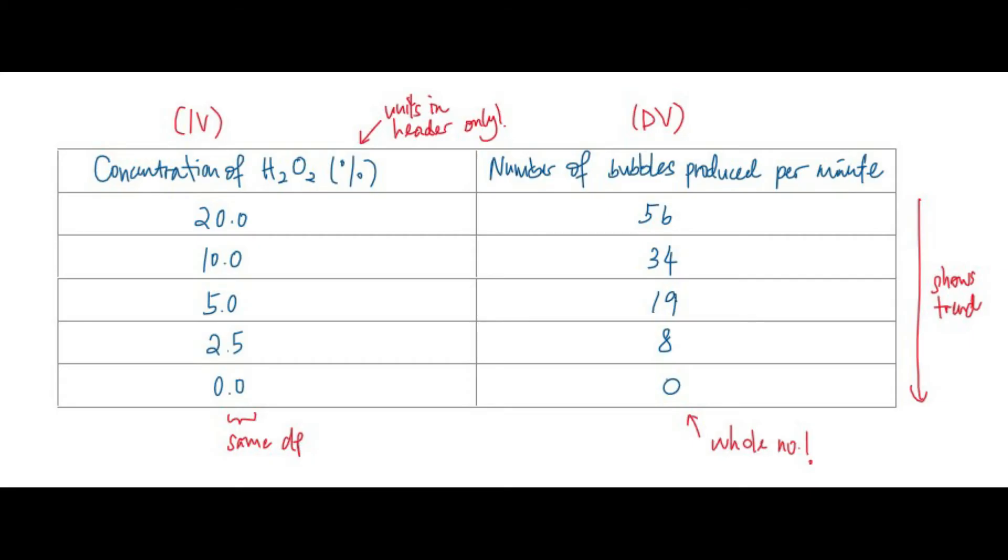After all, there's no such thing as half a bubble or 0.2 of a bubble. So make sure that your numbers of bubbles are always expressed in the whole number, even when it's a mean.